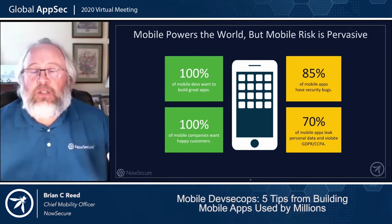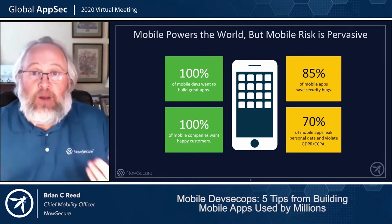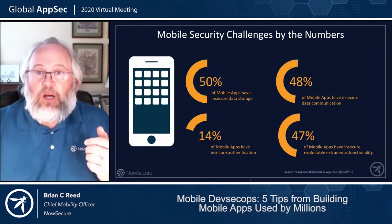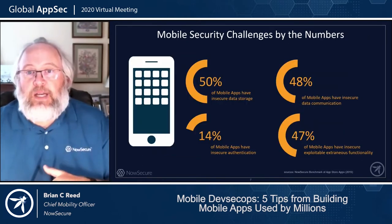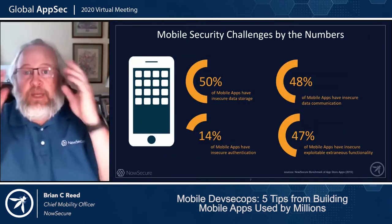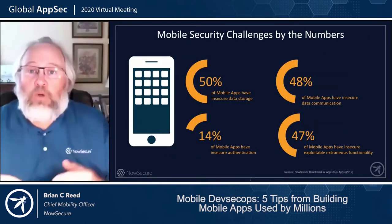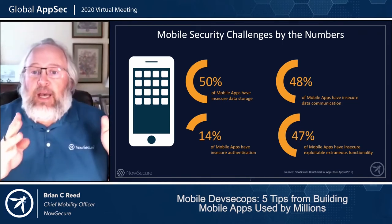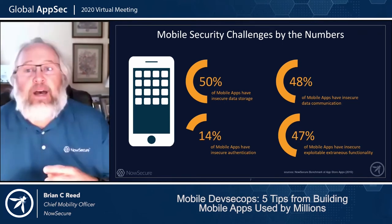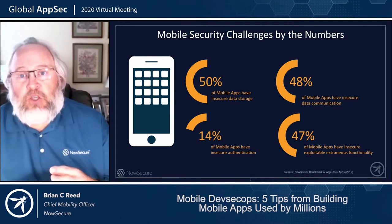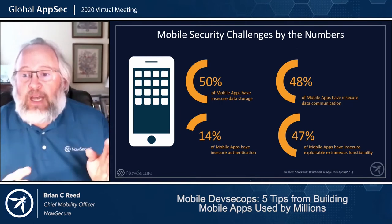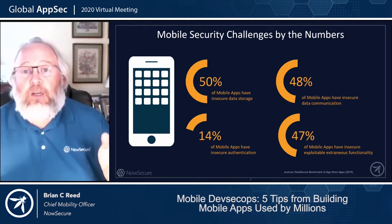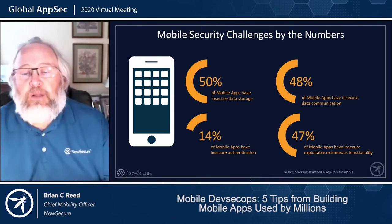What that tells us is that while organizations are producing great mobile application experiences, they're missing the ball on the security side. When you dig into the benchmark, there are real patterns: 50% of mobile apps have insecure data storage and about half have insecure communication. Almost half have insecure extraneous functionality — these are from the OWASP Top 10.